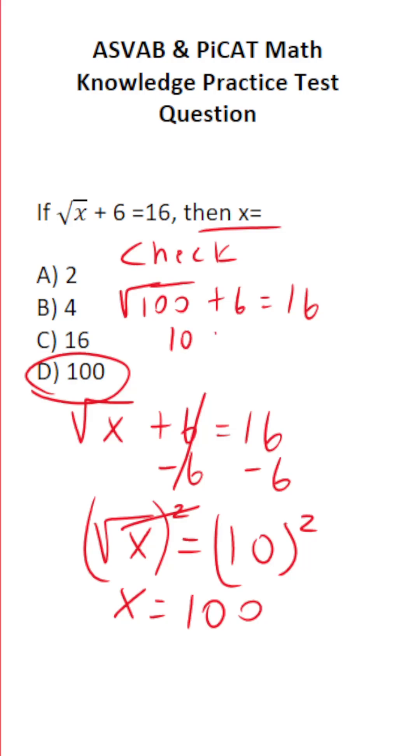The square root of 100 is 10 plus 6 equals 16. 10 plus 6 is 16. Does 16 equal 16? It does. Therefore, we know D is the correct answer.